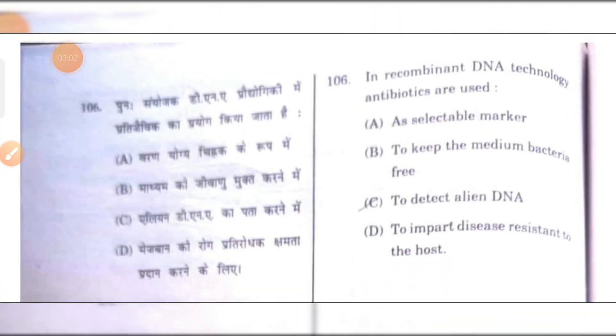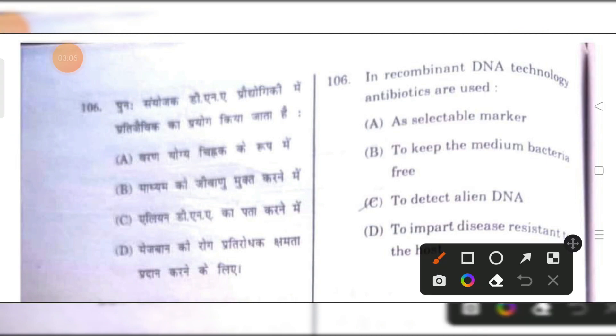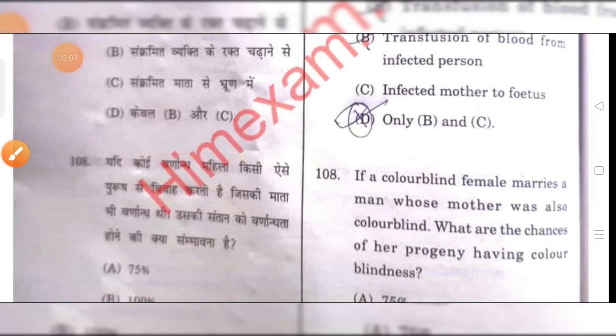In recombinant DNA technology, antibiotics are used as selectable markers. That is the right answer.